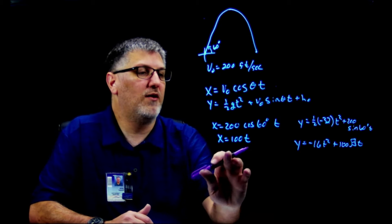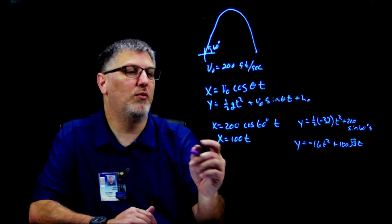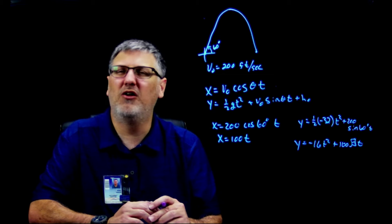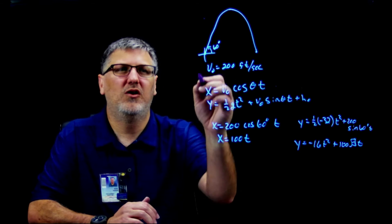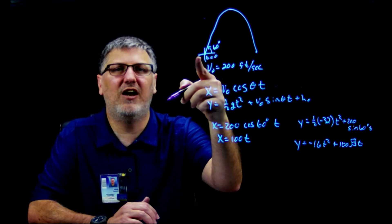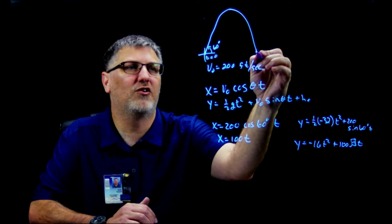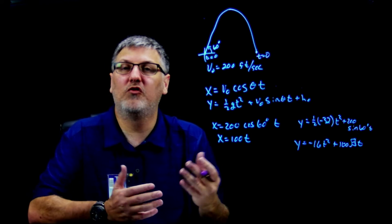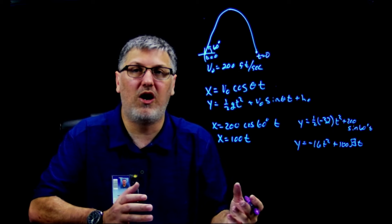Now I have my x and my y equation. Part B says how long is it in the air? We know it's not in the air at t = 0, and when it hits the ground y is going to equal zero. So I'm going to solve this one for zero.